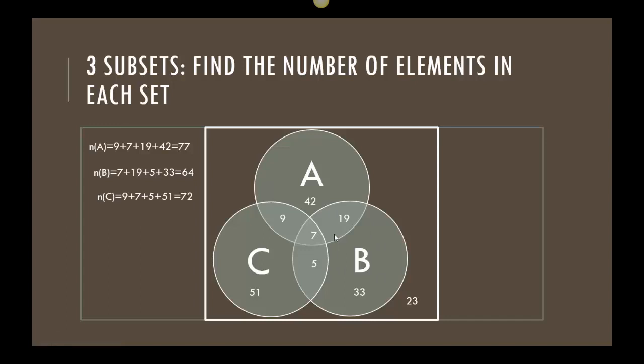If I move over to C, C has 9, 7, 5, and 51 inside its circle. So when I add those up, that gives me a total of 72.